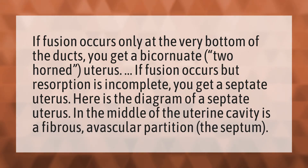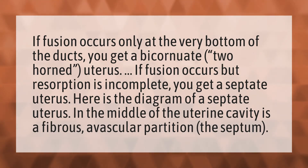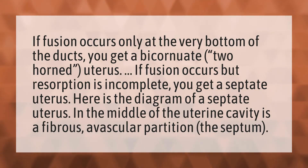If fusion occurs only at the very bottom of the ducts, you get a bicornuate, two-horned uterus. If fusion occurs but resorption is incomplete, you get a septate uterus.